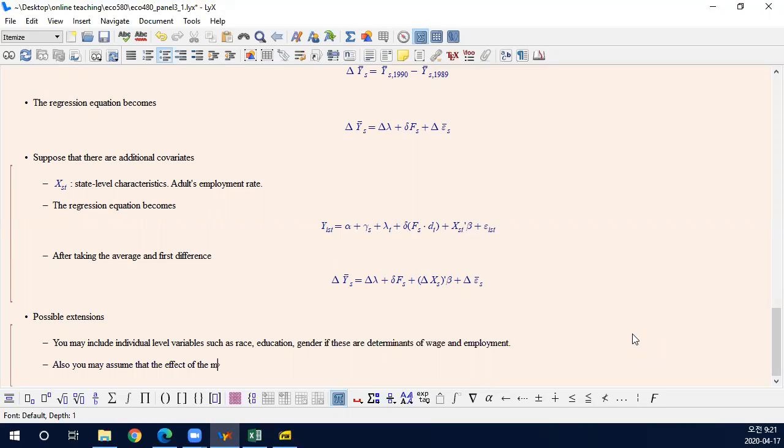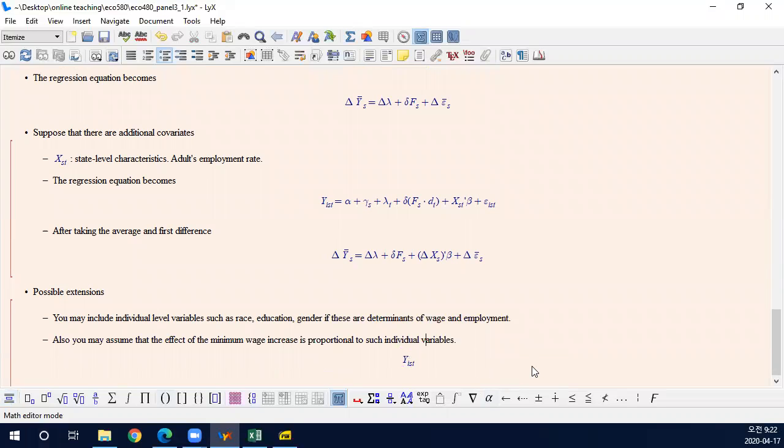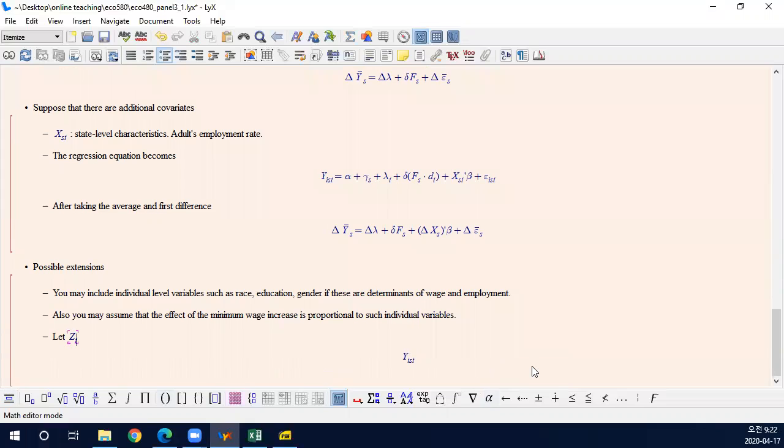It will be interesting. For example, think about education. It is clear that the effect of minimum wage will be larger for those who are low educated. So educated people are more affected by the minimum wage increase. So for example, you may think Y_IST. I am going to let Z_IST be the education. Simply you may consider race and gender and other individual variables, but let me simply consider this here. And also I will assume that it does not depend on time. Education does not change that much over a year, so it's not a big problem.